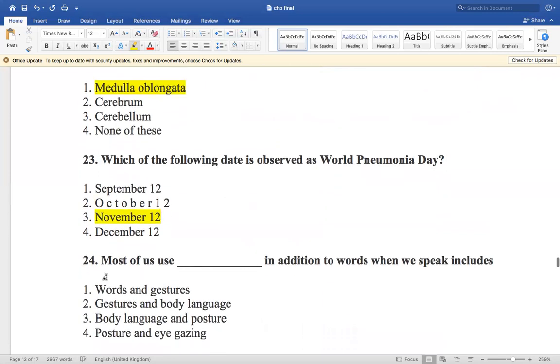Now the next is: most of us use dash in addition to words when we speak. Includes words and gesture, gesture and body language, body language and posture, position and eye gazing. So it is gesture and body language.